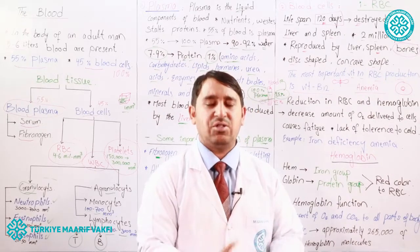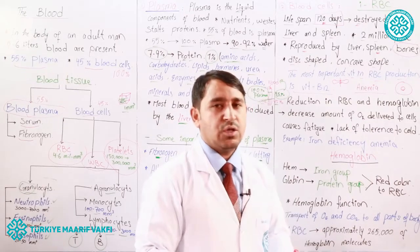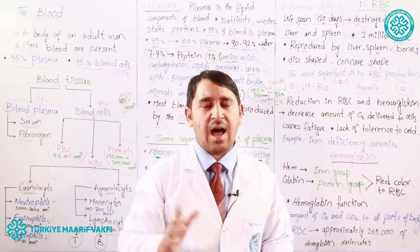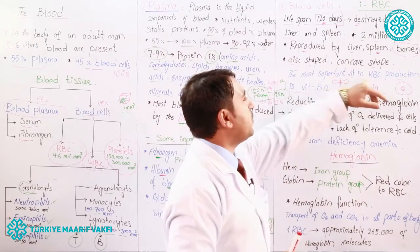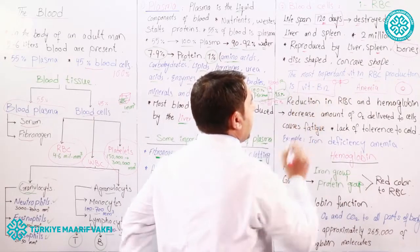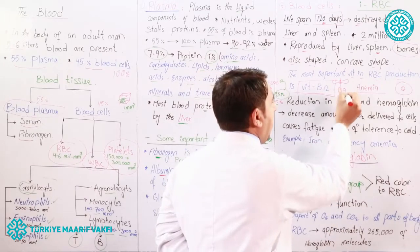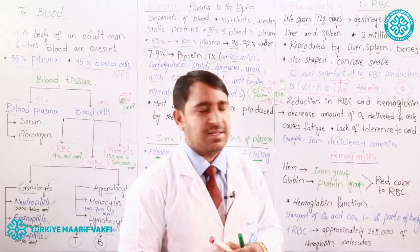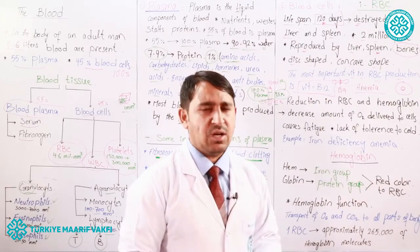For reproduction of RBCs, there must be certain materials and components. The most important vitamin is Vitamin B12, and another important vitamin is Vitamin B9, also called folic acid. These are the two most important vitamins in the reproduction and structure of RBCs.